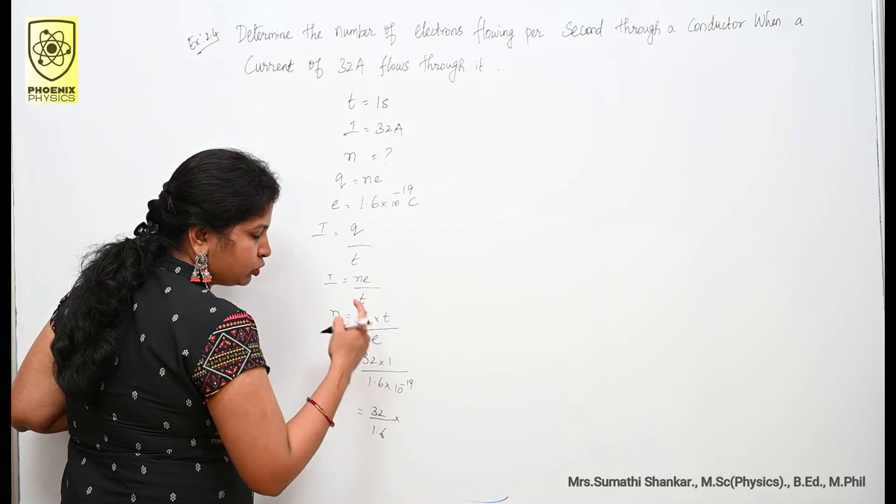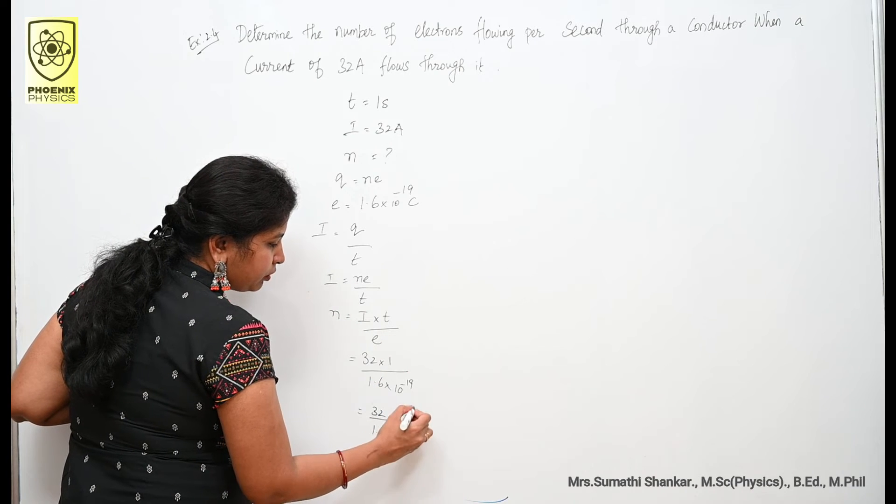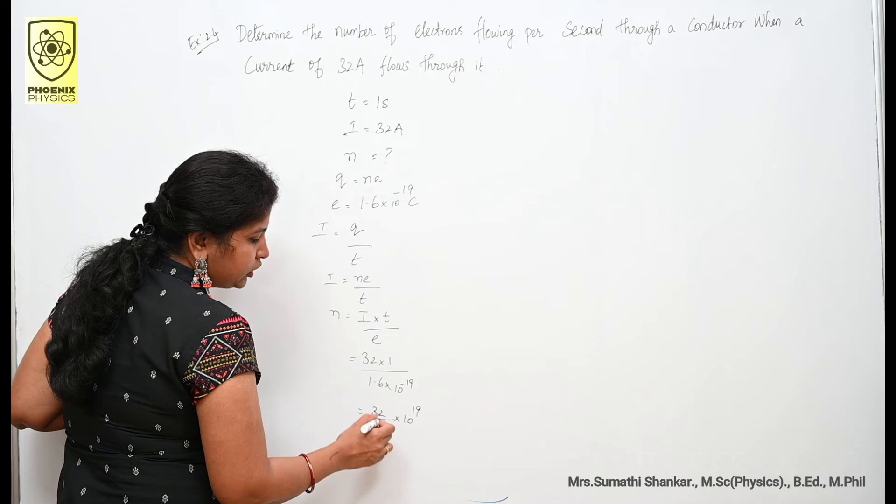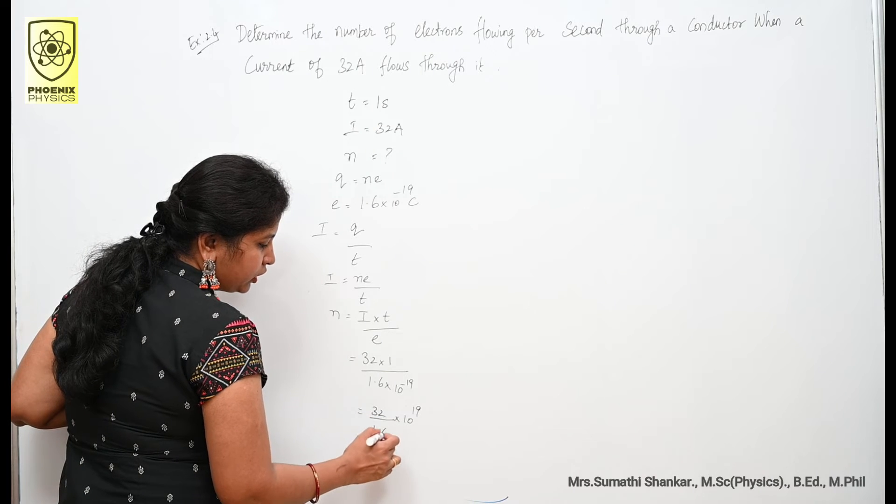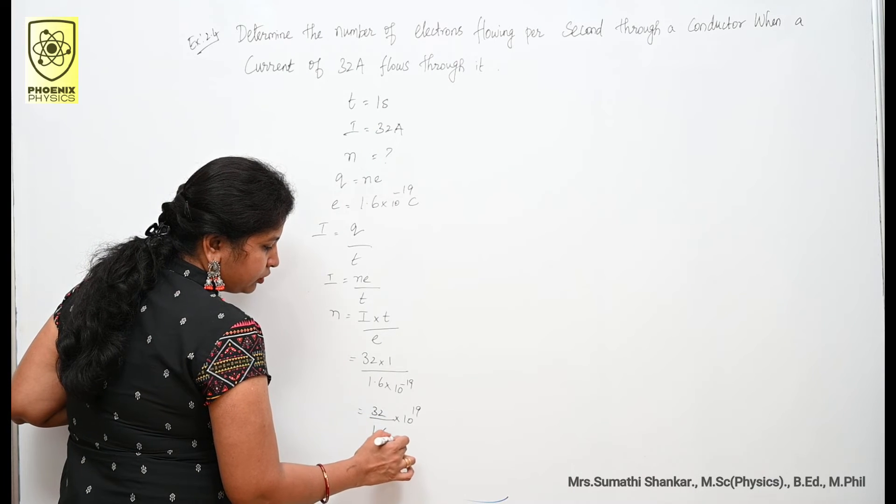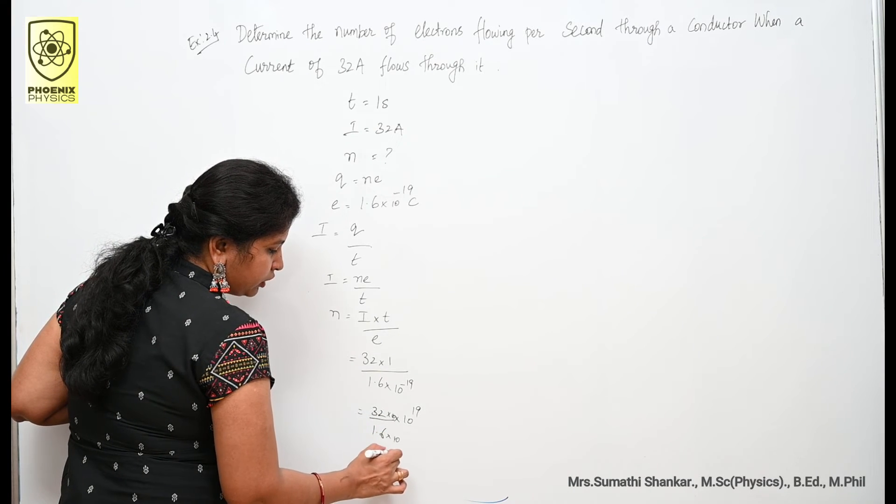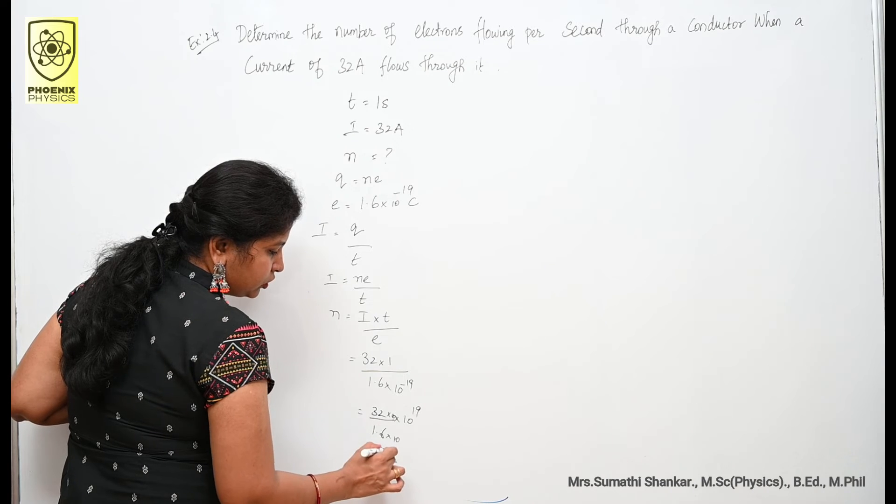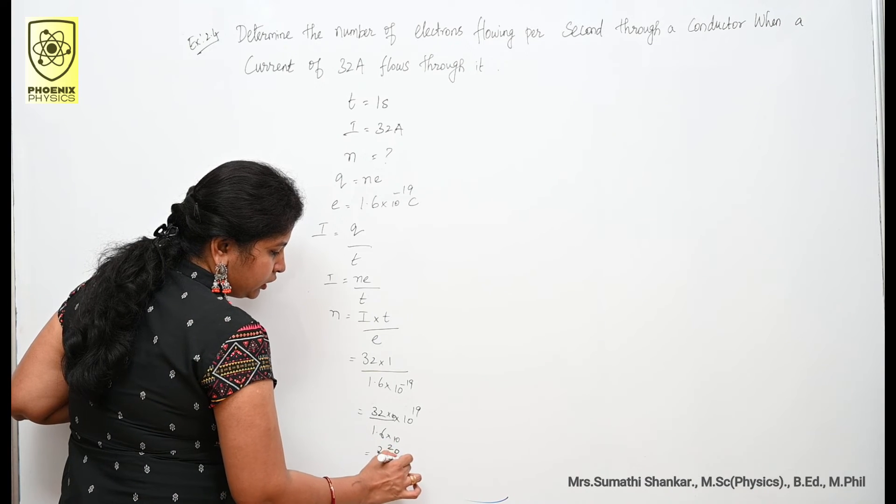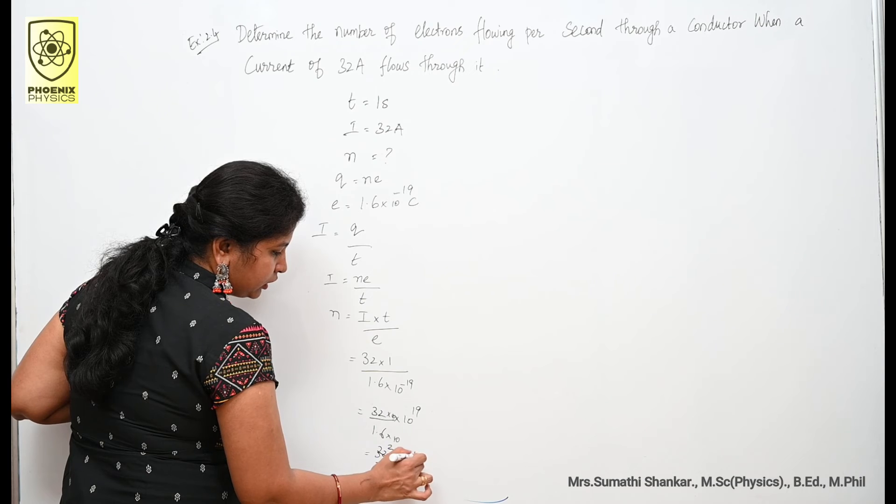32 divided by 1.6, multiply and divide by 10, so 320 divided by 16. Cancel this, 20 into 10 to the power of 19.